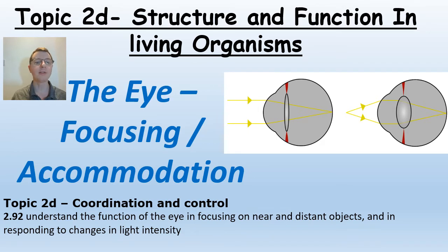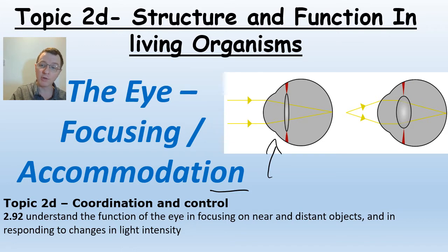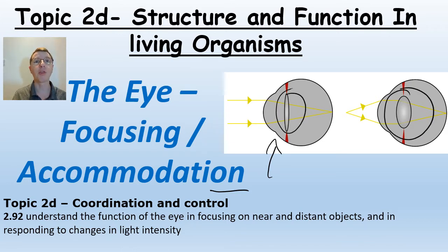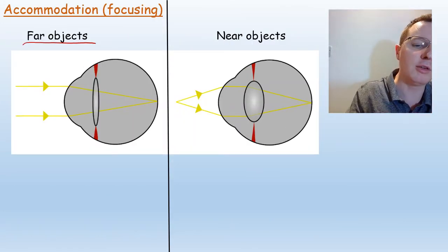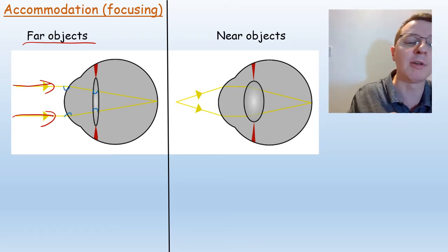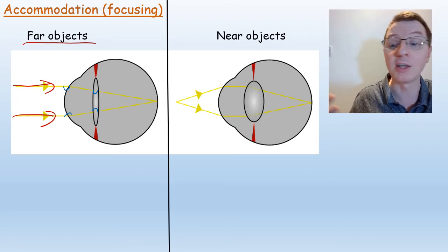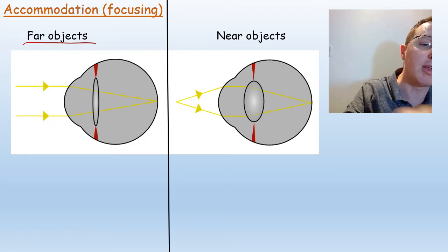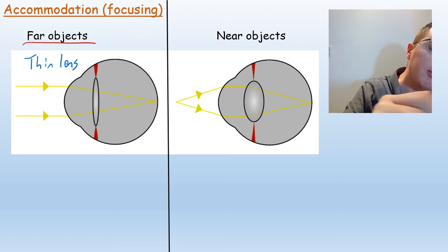Now we're going to take a more detailed look at focusing of the eye, known as accommodation in your exam. From the two diagrams, this really relies on the shape of the lens — how thick or thin it is — which determines how much the light is bent. If you're looking at an object far away, the rays of light appear to come in parallel, so they do not need to bend very much. They're bent a small amount by the cornea and again a small amount by the lens. To achieve this small amount of refraction, the lens itself needs to be very thin, and this is achieved via the suspensory ligaments.